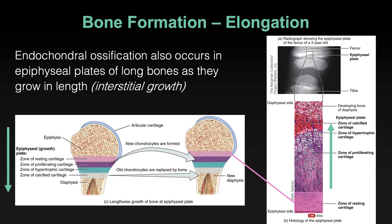The zone of resting cartilage is closest to the end of the bone. All you need to know is the name — this is cartilage that's not doing anything; it's at rest. Technically, this isn't even part of the growth plate; it's the place where cartilage is taken from, what fuels the growth plate. You can see a bunch of small chondrocytes in their lacunae, sitting quietly with lots of ground substance around them.